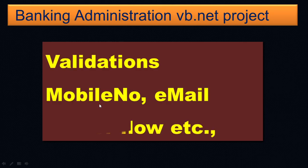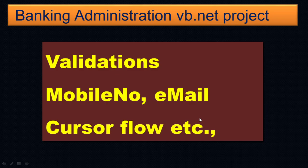We'll understand how to write a program to validate the mobile number or email ID, and we need to concentrate on whether data is entered in the text box or not. If there is no data, we have to ask the user to enter the data before allowing them to save the record. If the boxes are empty and you try to save, errors will come, so we need to avoid all these things.